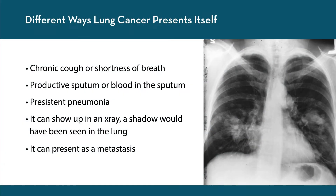What are the symptoms of lung cancer? Lung cancer can present in a variety of ways. It may present with a chronic cough or shortness of breath. There might be productive sputum or blood in the sputum. Another symptom might be a persistent pneumonia that keeps recurring or won't respond well to treatment. Lung cancer may also show up on an incidental x-ray where a shadow can be seen on the lung. Unfortunately, lung cancer might also present in the metastatic form, such as a seizure due to metastasis to the brain, or a bone fracture due to involvement of a bone.